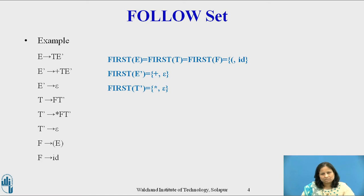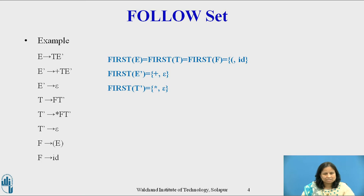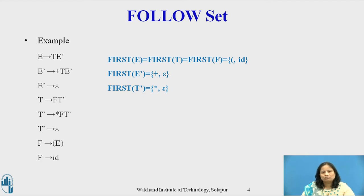Consider the first grammar with productions for arithmetic expressions: E derives T E', E' derives plus T E' or epsilon, T derives F T', T' derives star F T' or epsilon, and F derives left-parenthesis E or id. The first set for this grammar is given on the slide. We put dollar in the follow of E by Rule 1 for the follow set.